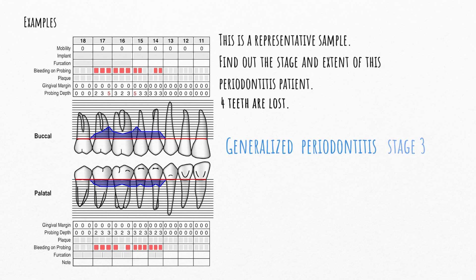What if the two teeth with 5 mm pockets were adjacent — for instance, 1.7 and 1.6? It is still a periodontitis case because the question mentioned it is a representative sample, meaning all first and second molars in the mouth will be affected, and 1.7 is not adjacent to 2.7. If the question does not state the sample is representative, it would not be periodontitis and the cause might be a local factor like an overhang.